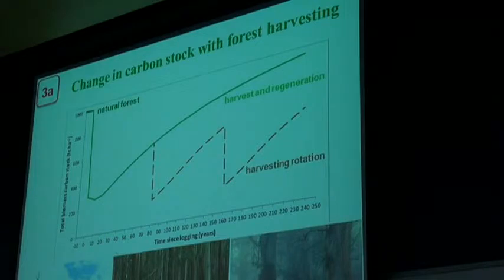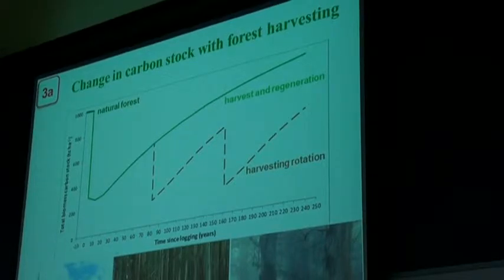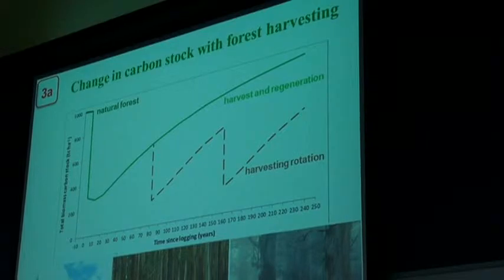In this example, the maximum carbon stock in the harvested forest when at its maximum age is about 60% of the natural state. Over a landscape harvested in patches, the actual carbon stock at any one time is the average—about 30% of the carbon stock in the natural forest.